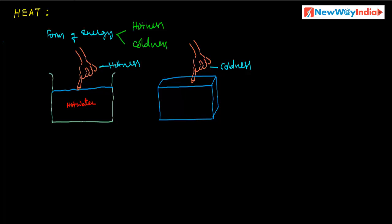Why? What happens here? The heat energy moved into the finger — in the case of hot water. In the case of ice, the heat energy moved out of the finger. When heat energy moves into the finger, our finger gains heat energy. When our finger loses heat energy, that is also heat energy leaving the body.